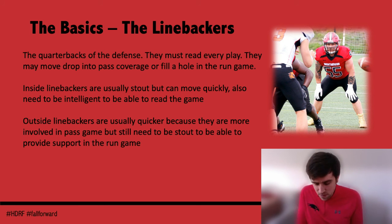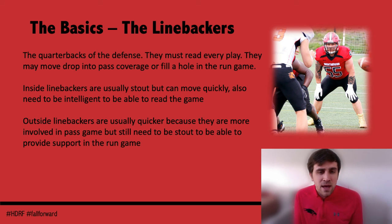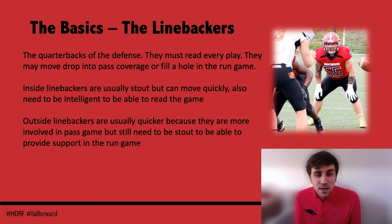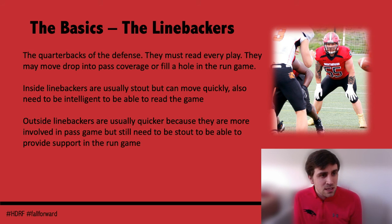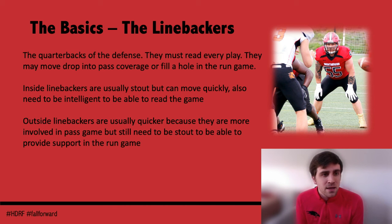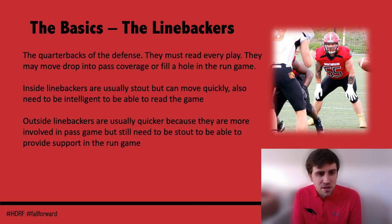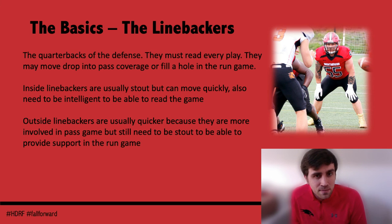Inside linebackers — the Wills and Mikes in the middle of the field — tend to be a bit more stout than outside linebackers because they need to fill gaps and go against offensive linemen and running backs coming through those holes. Short-area quickness is really helpful so they can make the read and react quickly, and they also need to be intelligent to read the game. Outside linebackers — the Sam and the Rover — tend to be quicker because they're more involved in the pass game covering wide receivers, but they also need some thickness for supporting the run game and taking on offensive linemen.